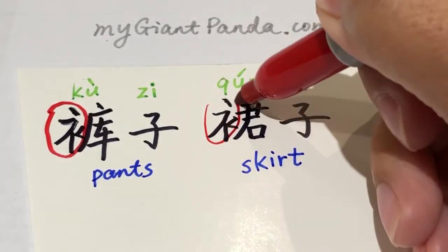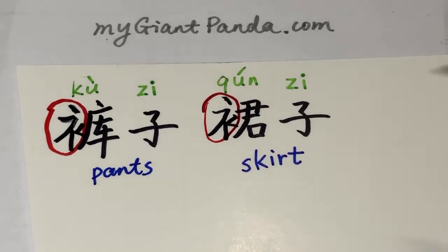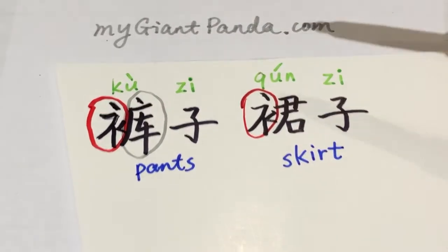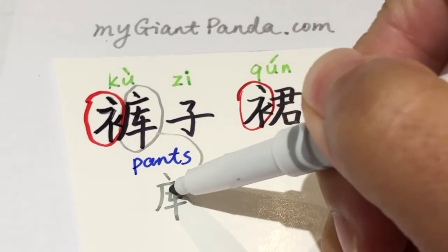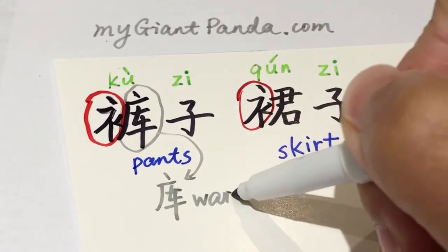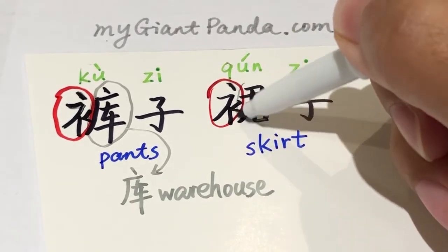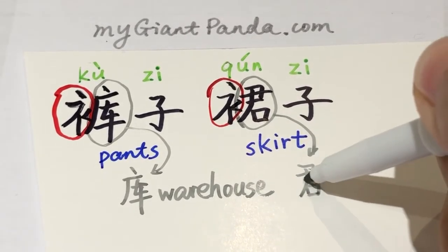我们把衣字旁圈出来。裙子、裤子都是衣字旁，因为它们都是衣服，但不是所有的衣服都是衣字旁。那在这个，我们现在用拆分法多学几个汉字。裤子的裤，右边这一部分也是一个汉字，是库，仓库的意思。裙子的裙，右半部分也是一个字，是君，君子的君。